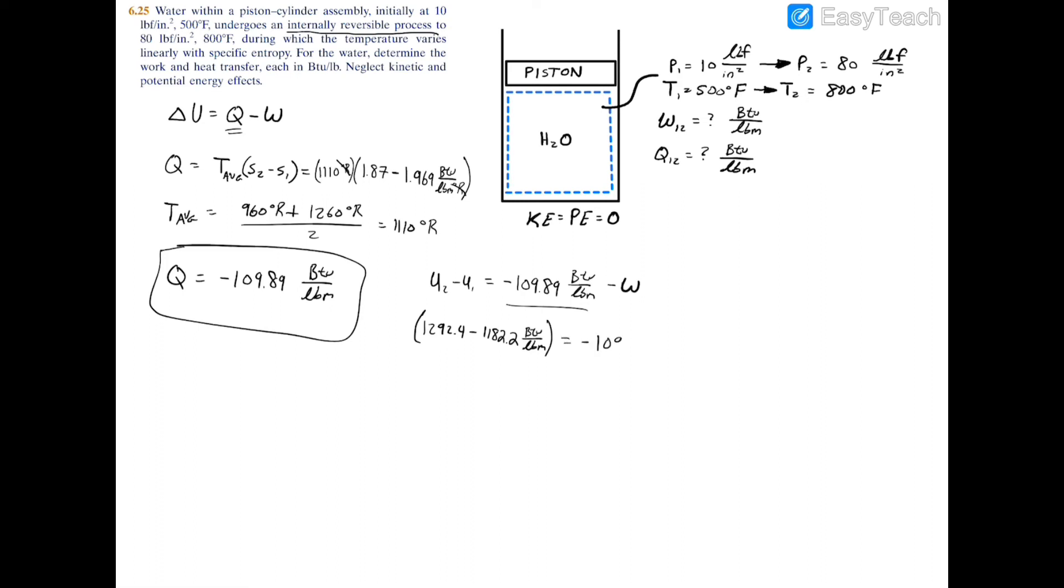With these two values filled in, we can close our bracket. That's all equal to the heat transfer of negative 109.89 BTU per pound mass minus your work. If you rearrange and solve for your variable W, you'll find that your work equals negative 220.09 BTU per pound mass.